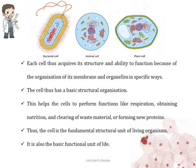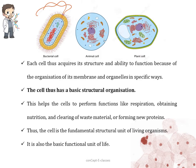Each cell acquires its structure and ability to function because of the organization of its membranes and organelles in specific ways. Thus we can say that the cell has a basic structural organization. This helps the cell perform functions like respiration, obtaining nutrition, clearing waste material, and forming new proteins. Hence we can say that the cell is the fundamental structural and functional unit of the living organism.